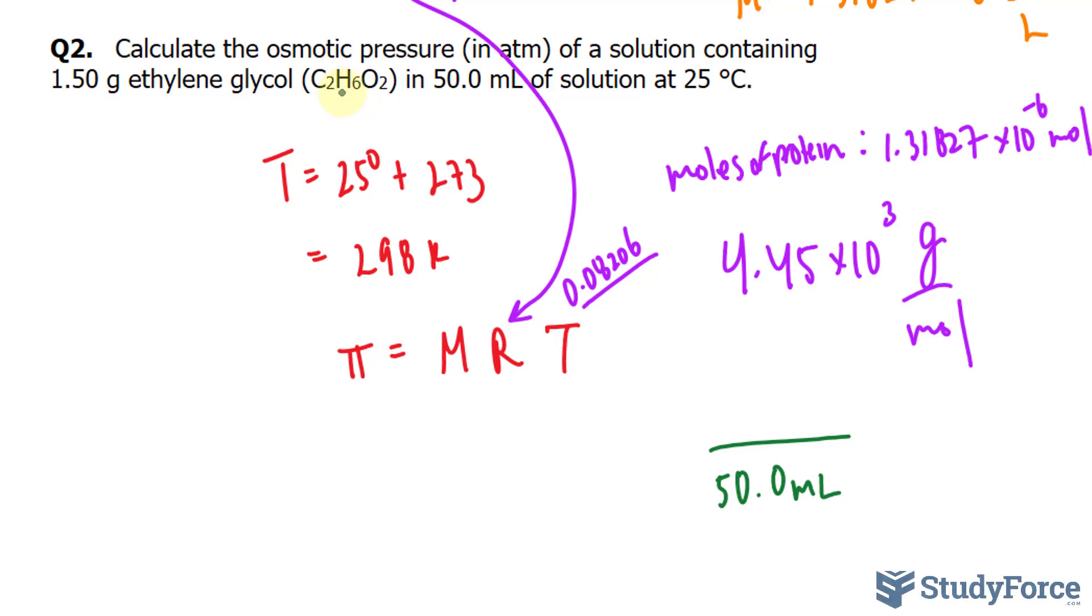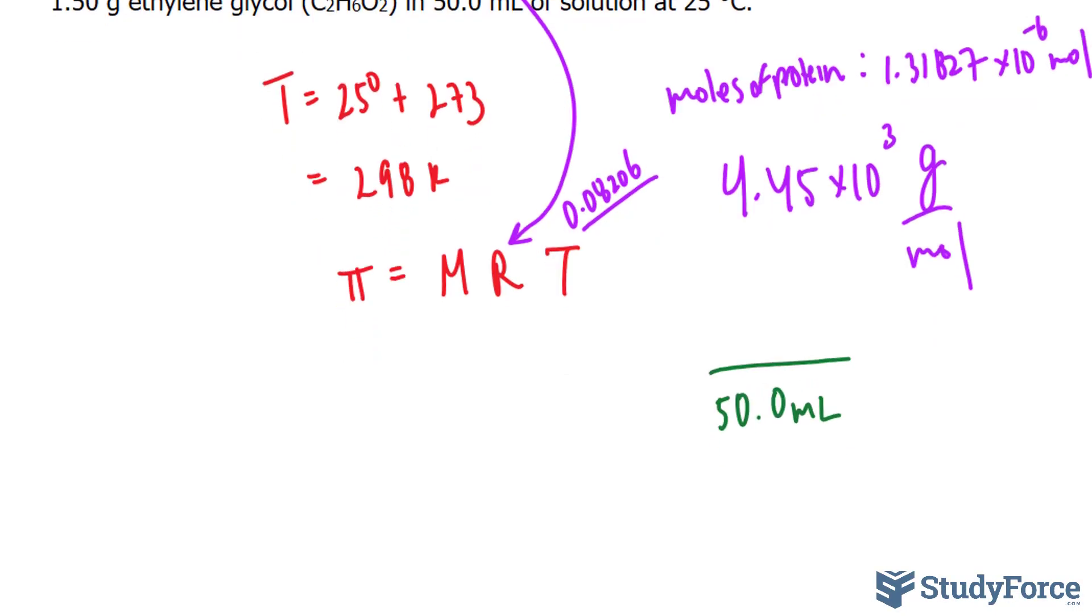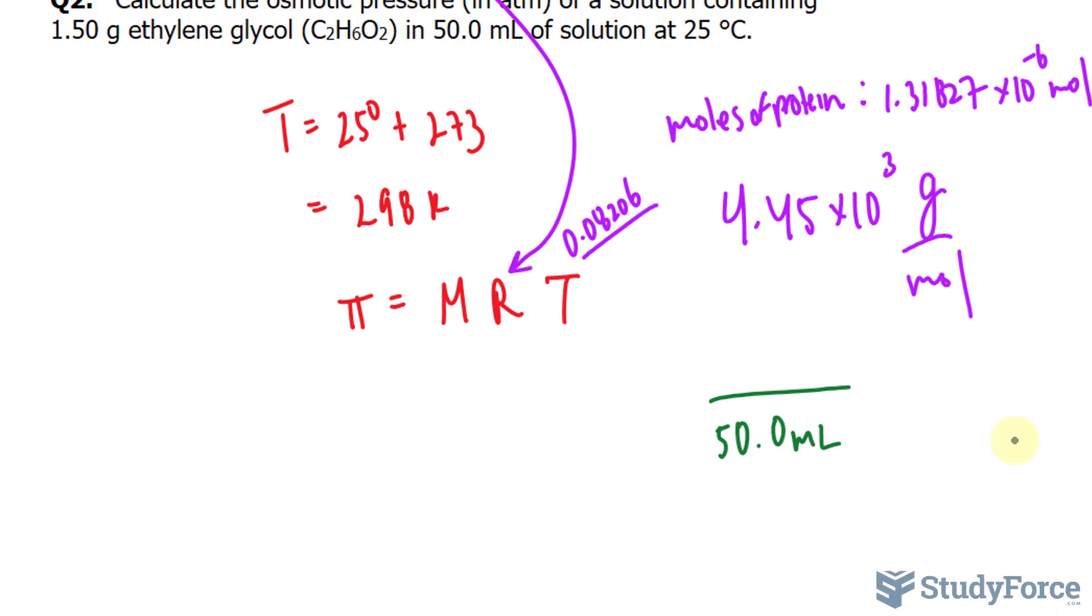Once I find grams per mole, I can then somehow multiply it to 1.50 to get the moles. So let's start off by finding the grams per mole, the molar mass. We have two carbons. So carbon has a molar mass of 12.01 multiplied by 2 plus 1.01, the molar mass of hydrogen,